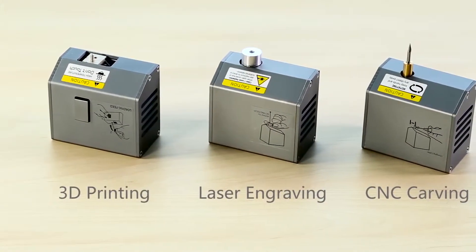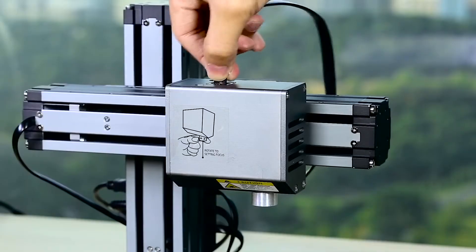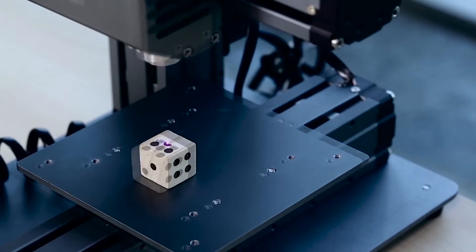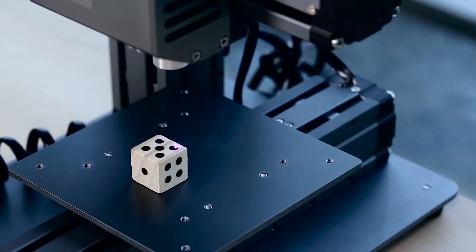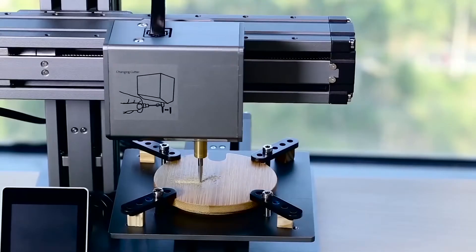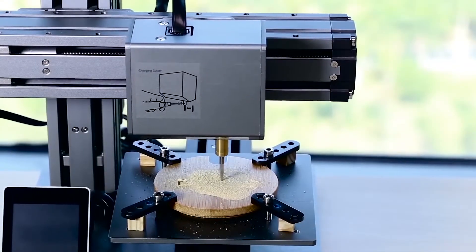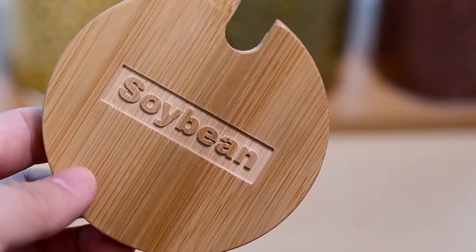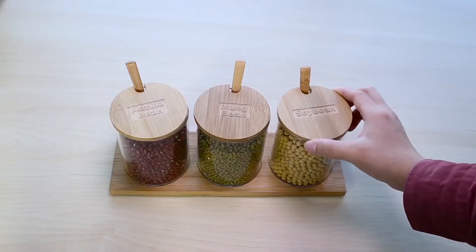The Snapmaker also features expanded options of laser engraving and CNC carving with interchangeable heads. Snapmaker can be easily transformed into a laser engraver that sparks your creativity and CNC carving machine that lets your imaginations run wild.